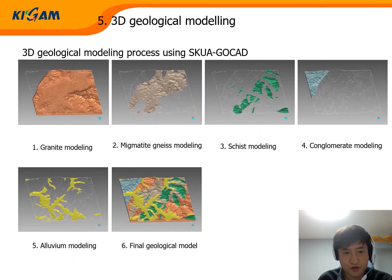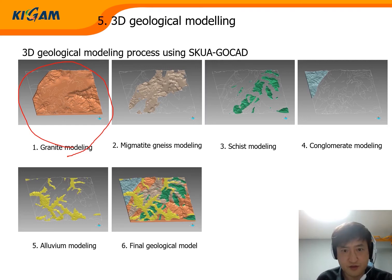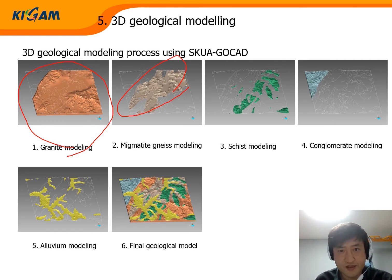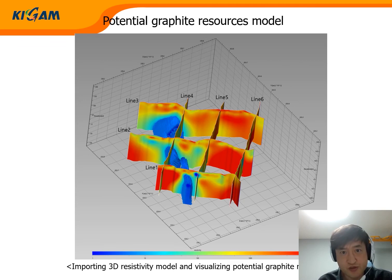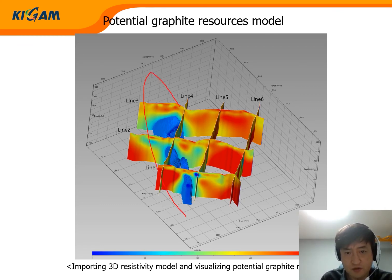We constructed the 3D geological model based on the geological map and geological survey results. The basement is granite. The direction of the host rock migmatite is northeast, correlated to the ore direction. This slide shows the potential graphite resource model reconstructed from the 3D resistivity model. We imported the volume of less than 10 ohm-meters as graphite ore, giving us the volumetric graphite ore distribution.